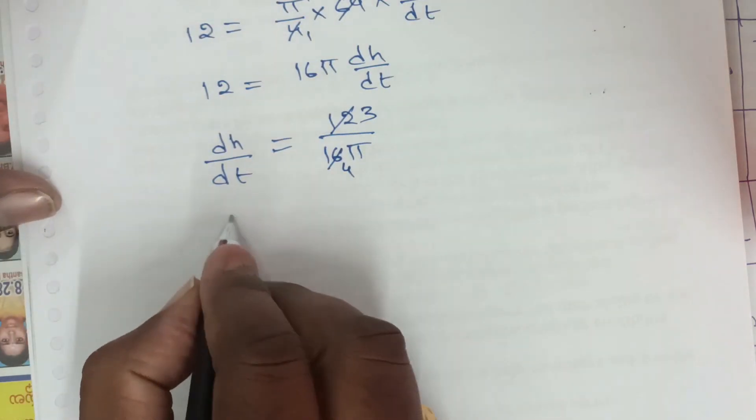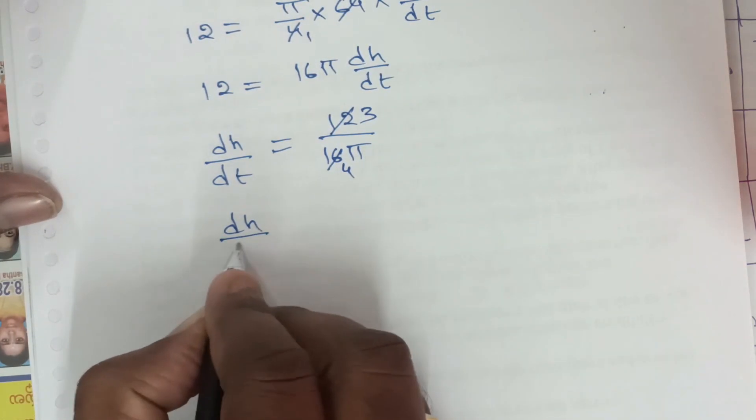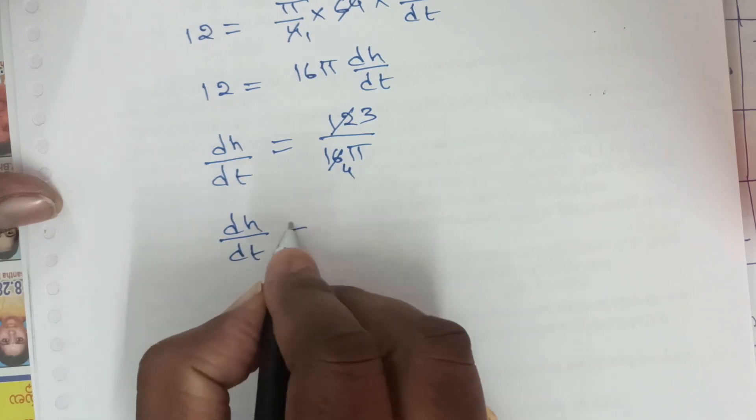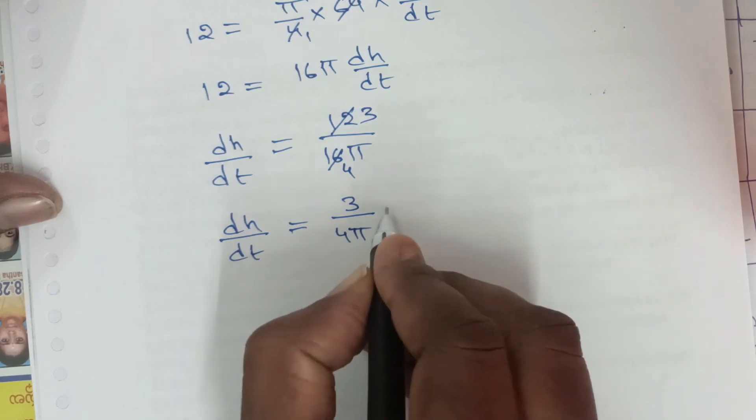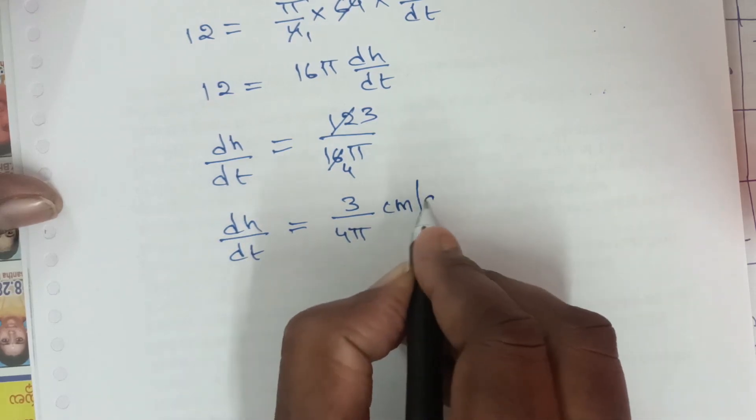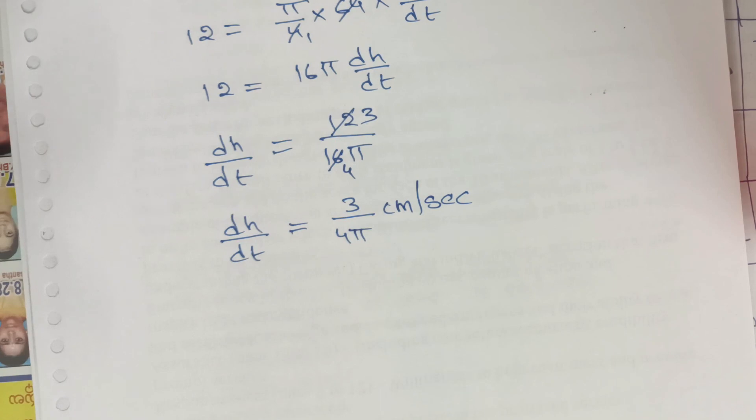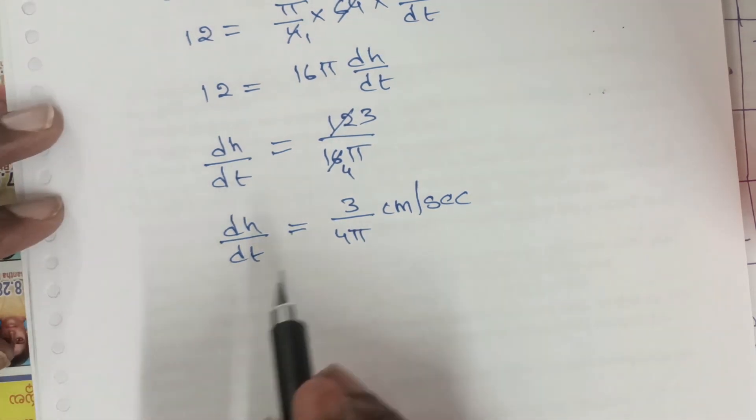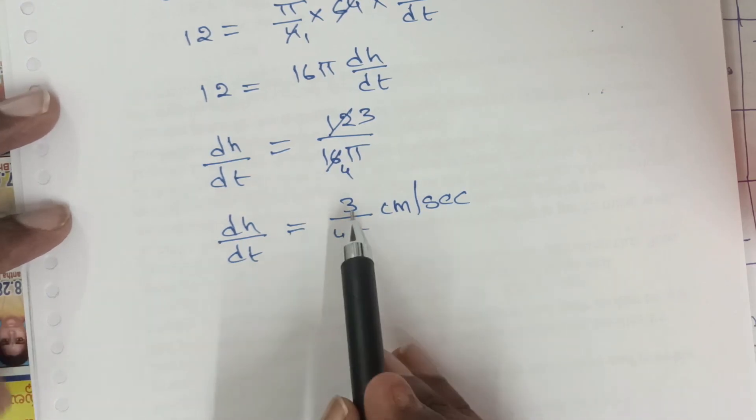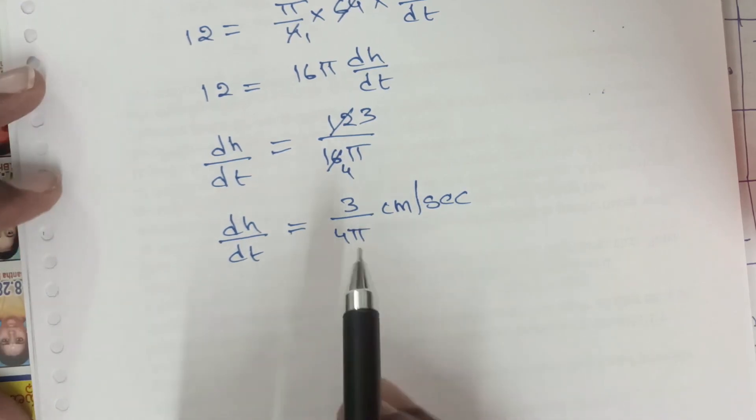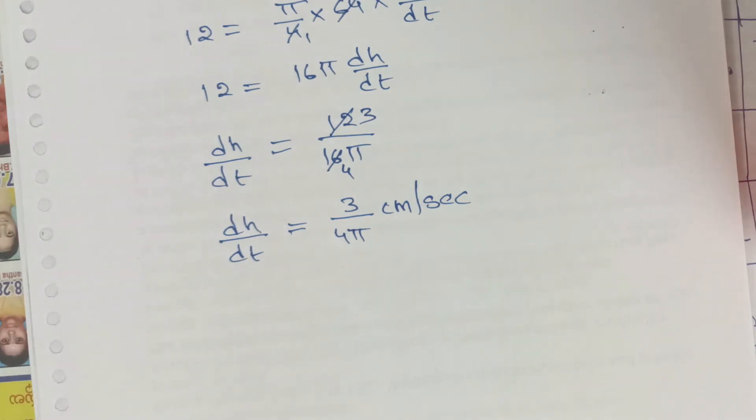That means dh/dt = 3/(4π) centimeter per second. This is the rate of change of water level height: 3/(4π) centimeter per second. Okay, clear.